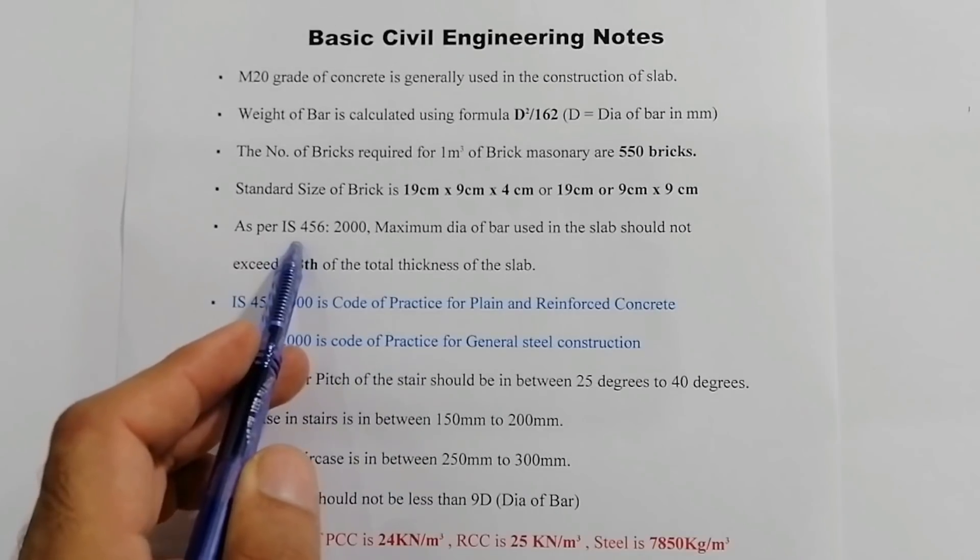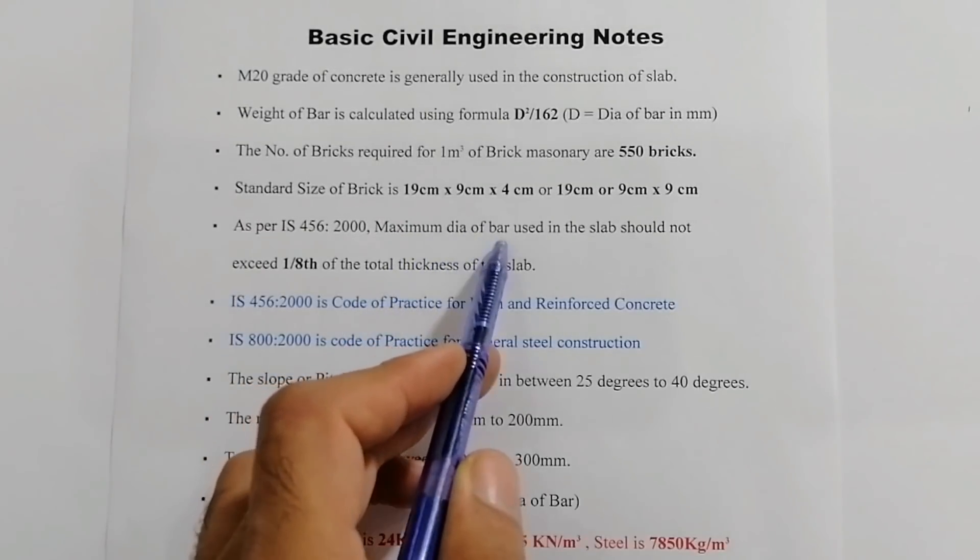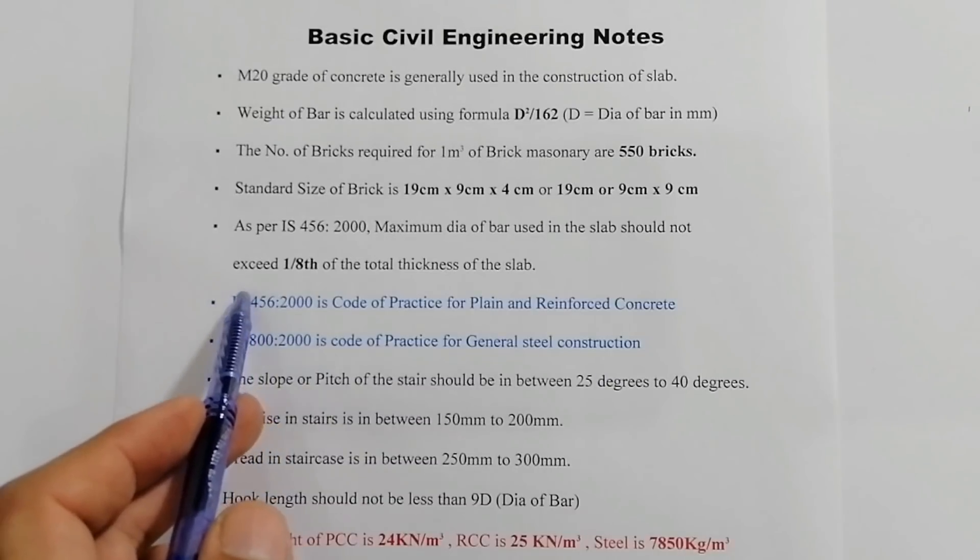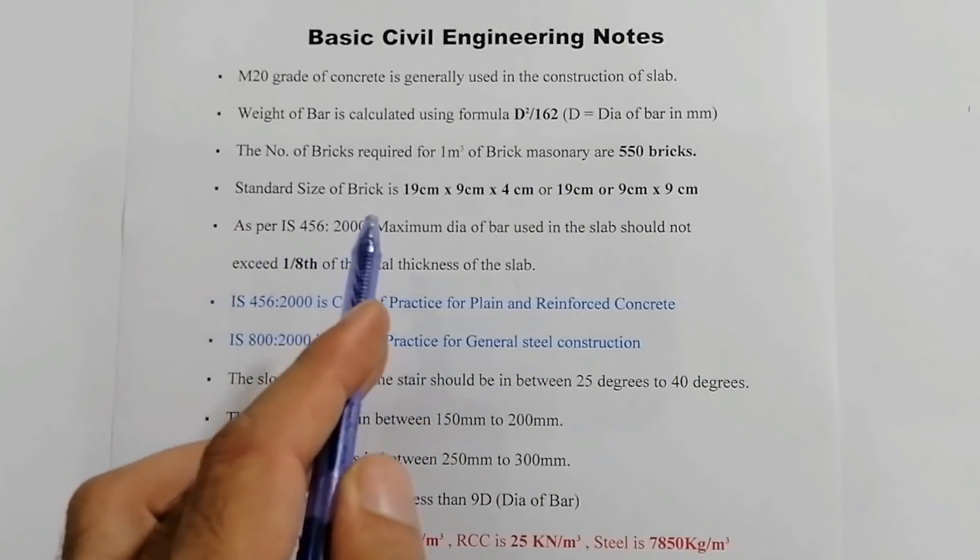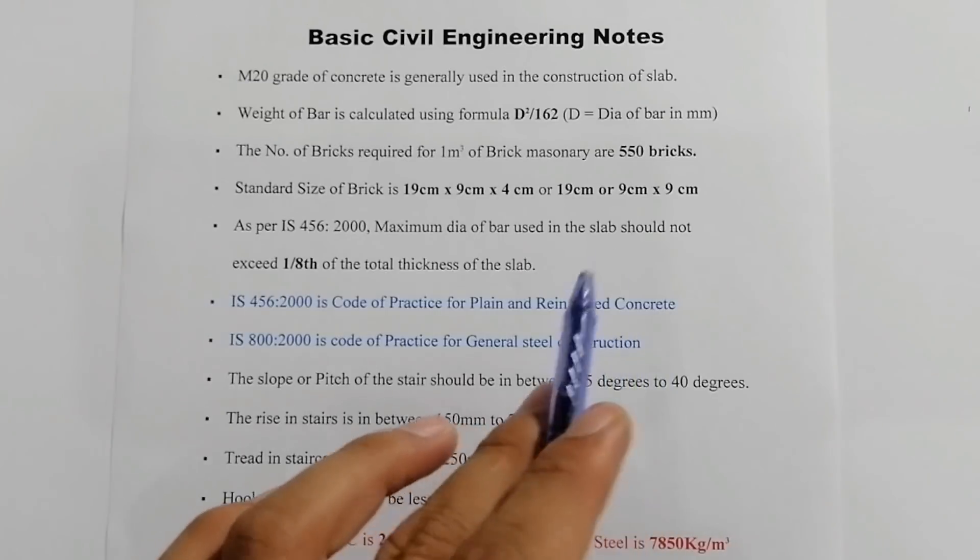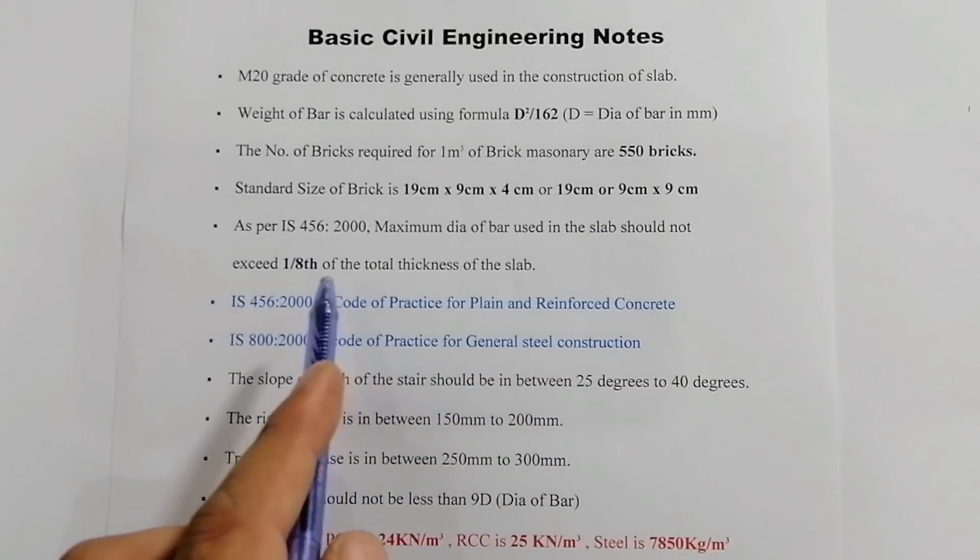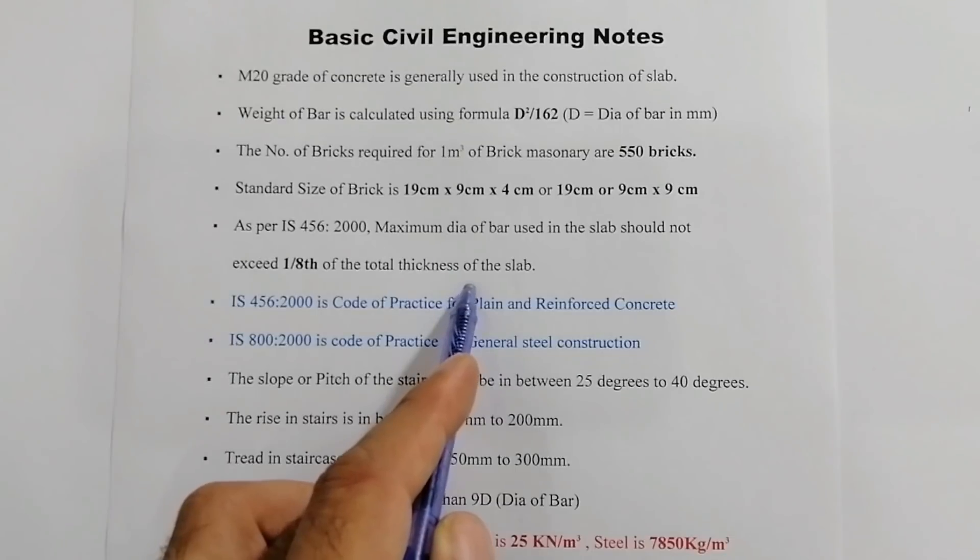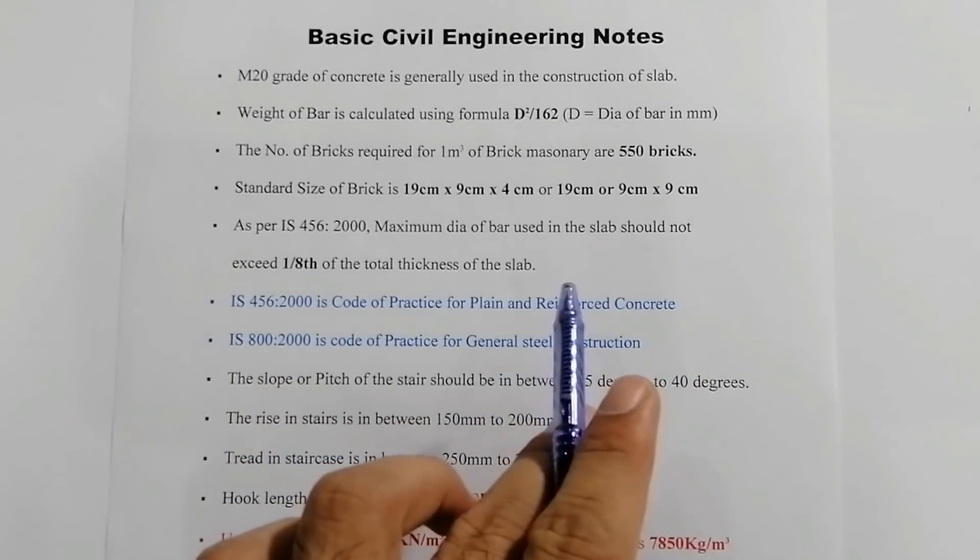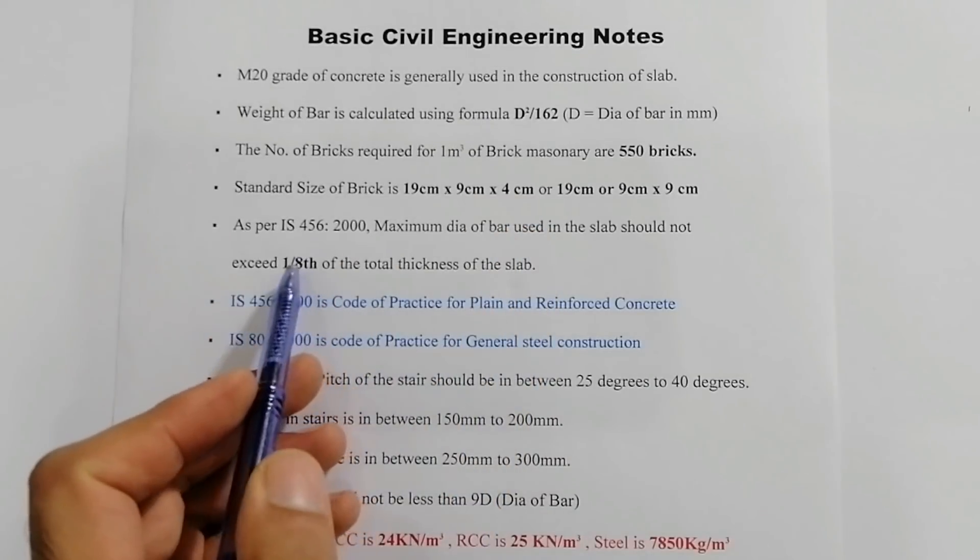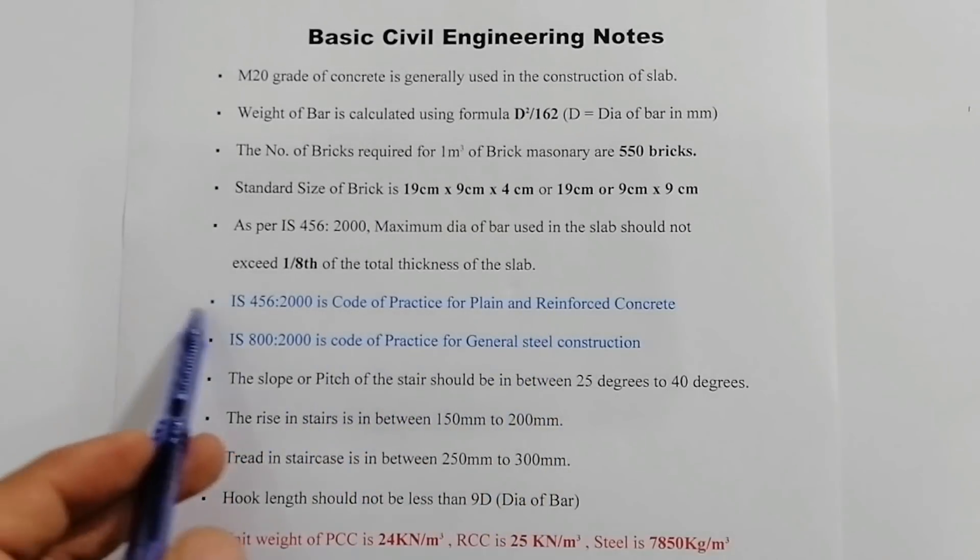As per IS 456:2000, maximum diameter of bar used in RCC slab should not exceed 1/8th of the total thickness of the slab. Remember that as per IS 456:2000 code, you are able to learn what is the maximum diameter of steel bar that should be used in RCC slab—it should not exceed more than 1/4th of total thickness of the slab. For example, if the thickness of the RCC slab is 8 inches, you can use one inch diameter of steel bar, or by this formula 1/8 you can use.